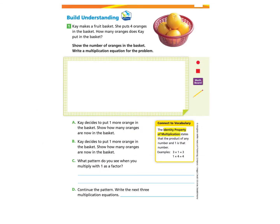Please gather your workbook and a pencil and turn to page 84 under Build Understanding, Problem 1. K makes a fruit basket. She puts 4 oranges in the basket. How many oranges does K put in the basket? Show the number of oranges in the basket. Write a multiplication equation for the problem.